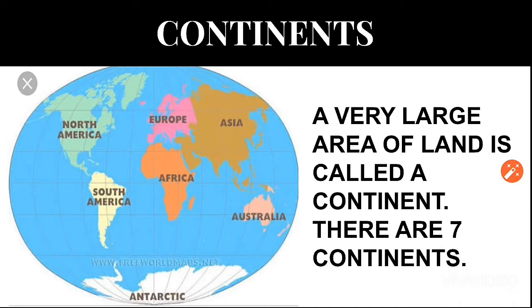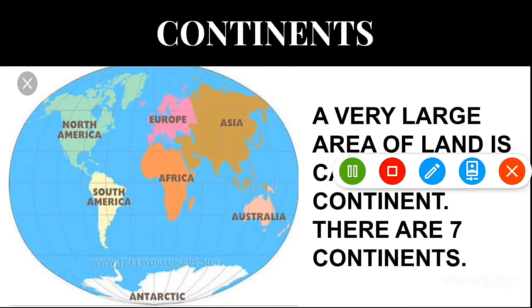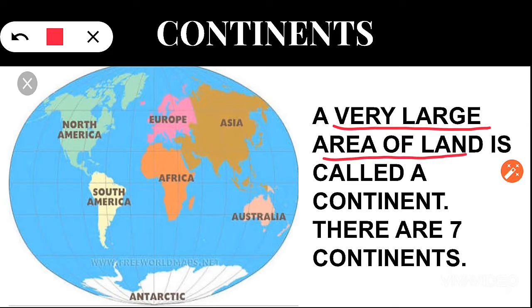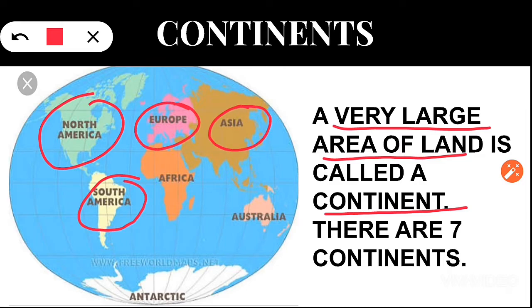On the earth, if you have noticed, you will see either water bodies or land masses. The very large areas of land that you find on the earth are continents. There are a total seven continents on the earth. They are North America, South America, Europe, Asia, Africa, Australia and Antarctica.